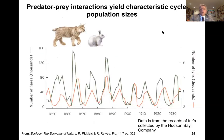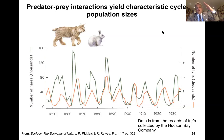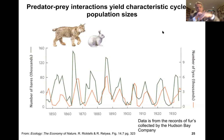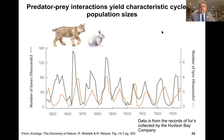In looking at the interaction between the primary producer and primary consumer, we saw they can affect each other's population dynamics. As abundance of the primary producer was up, we have an increase in the primary consumer. The primary producer population declines, followed by a decline of the primary consumer — as with the Klamath weed and beetle example.